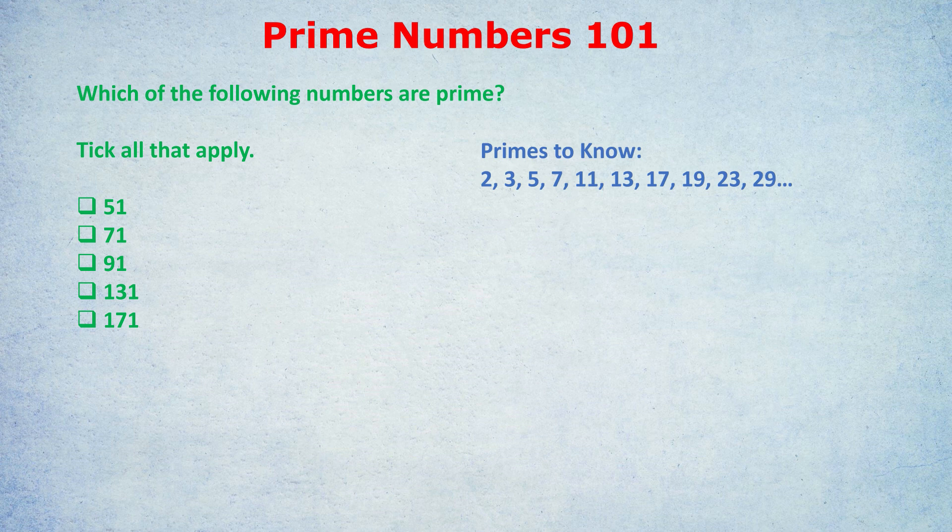This question here is quite advanced. Which of the following numbers are prime? Tick all that apply. You might be thinking, in the GRE we could just test loads of numbers because we have a calculator. If you don't know the following method, you're going to be wasting a whole lot of time. How can we check which of these numbers on screen are prime? For 51, do we have to check 2, 3, 4, 5, 6, 7, 8, 9 until we give up? No.